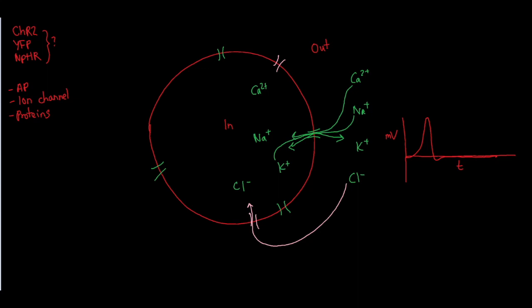And this all happens endogenously within the cell. The ion channels are opening and closing on their own. So now you might ask, how could we artificially generate an action potential?